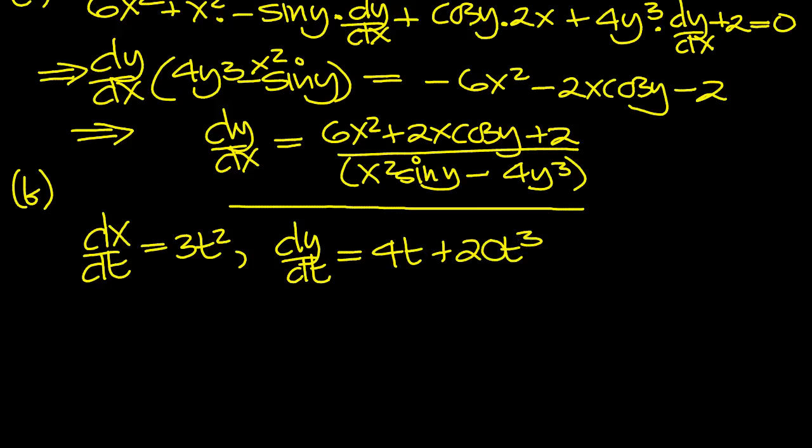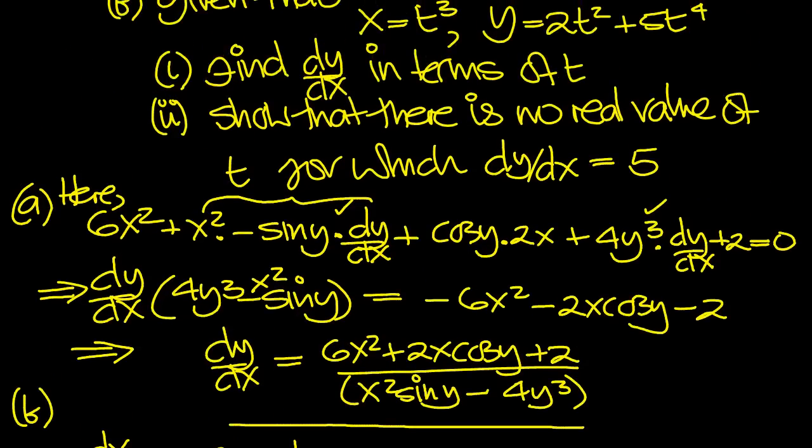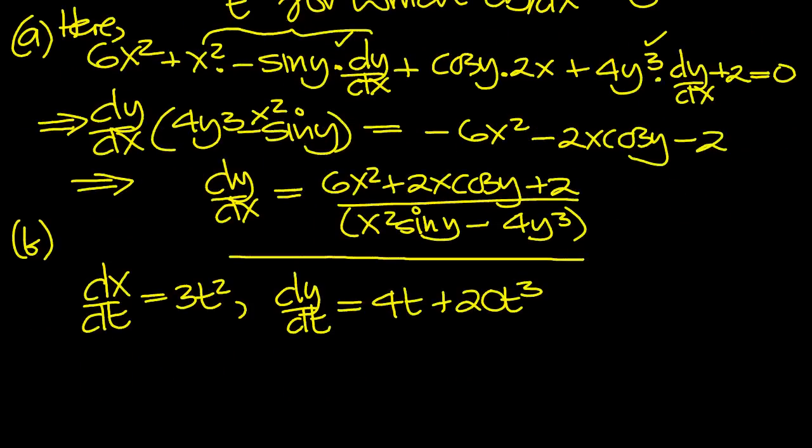Let's just look at that again to be absolutely happy with that. So 2 comes down to make 4t to the 1. The 4 comes down, 20t cubed.